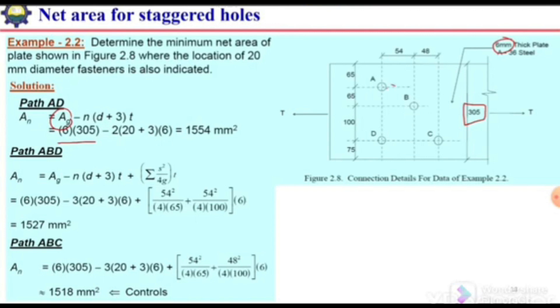We need to check how many holes will come in this path—A and D, these two holes, so n will be 2. The area to subtract is n times (d + 3) times t, where we add 3 mm for the hole diameter plus damage allowance times thickness. Since we don't have any stagger here, we need not add s²/4g.